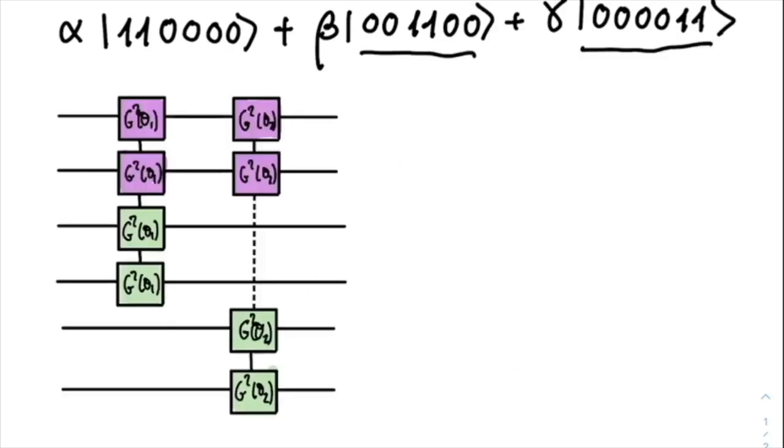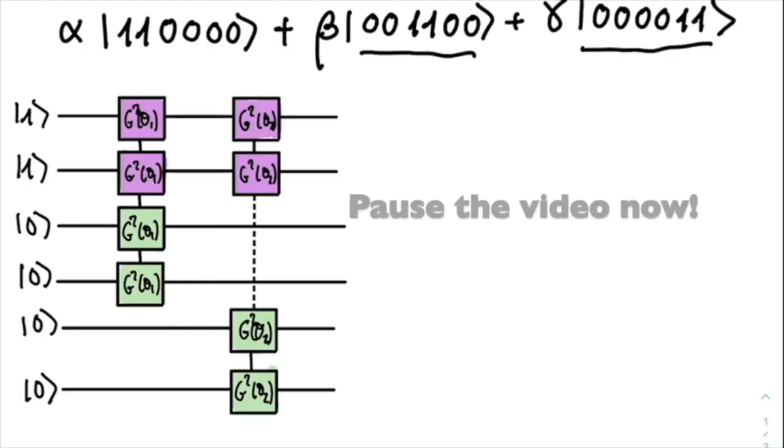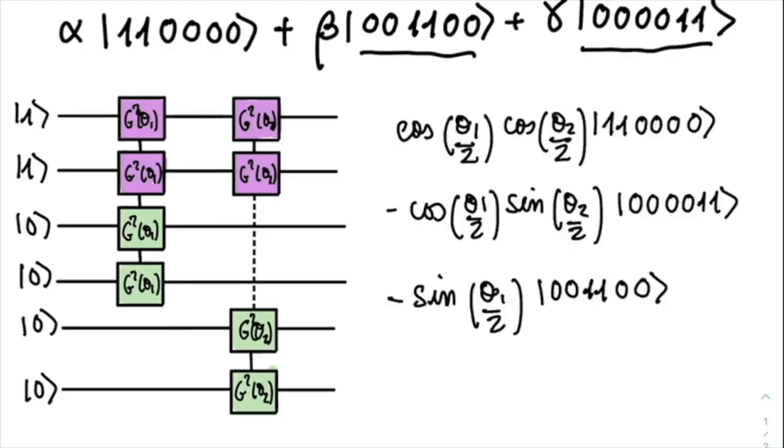Here is the circuit that allows us to form this arbitrary superposition between the Hartree-Fock state and these excited states. If the initial state is the Hartree-Fock state, so 1, 0, 1 and the rest 0s, can you tell me what will be the output state after going through this circuit? Take a minute to figure it out. If your answer is what is appearing on the screen right now, you've got it. You've learned how to act with double excitation gates. Take a look that this is indeed an arbitrary superposition of these states with real coefficients.